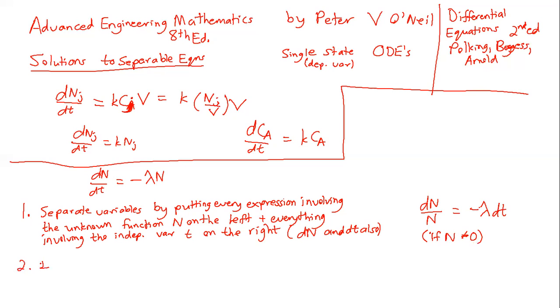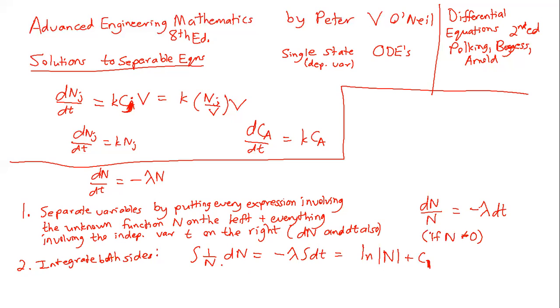The next step is to integrate both sides. The integral of (1/N) dN equals −λ times the integral of dt, which gives ln|N| + C₁ = −λt + C₂. You can combine those two constants — call C = C₂ − C₁ — leaving ln|N| = −λt + C.